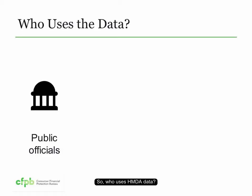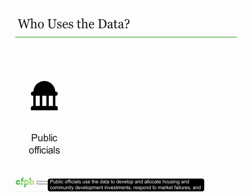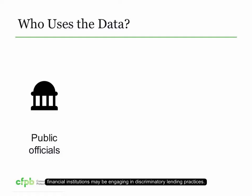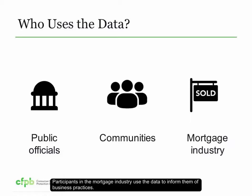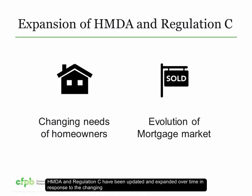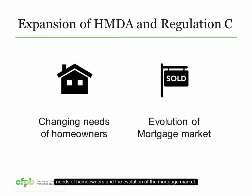Who uses HMDA data? Public officials use the data to develop and allocate housing and community development investments, respond to market failures, and monitor whether financial institutions may be engaging in discriminatory lending practices. Communities use the data to ensure that lenders are serving the needs of individual neighborhoods. Participants in the mortgage industry use the data to inform them of business practices. HMDA and Regulation C have been updated and expanded over time in response to the changing needs of homeowners and the evolution of the mortgage market.